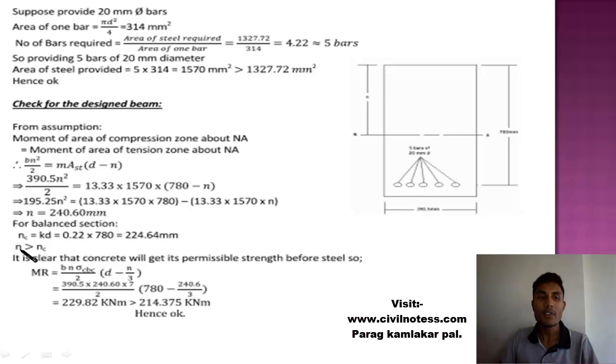It is clear that the concrete will get its permissible strength before steel. So MR equals moment of resistance equals bn sigma CBC by 2 times d minus n by 3. Put all data. Hence MR is greater than the required moment, so steel is okay at this point. This check is satisfied, both are coming as under reinforced section. That's it, our design is safe and now you can implement it on your particular site.